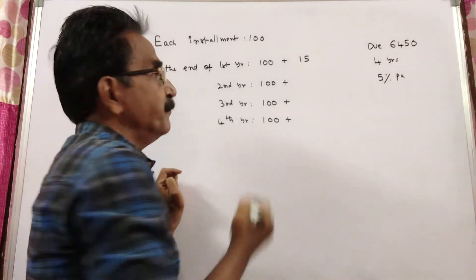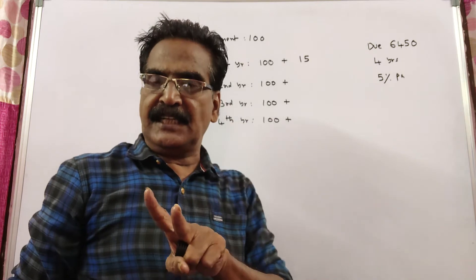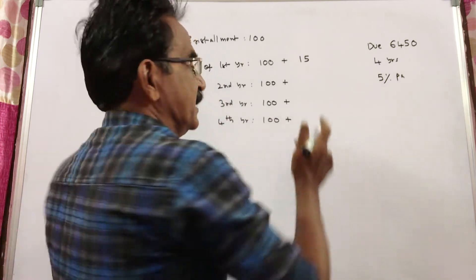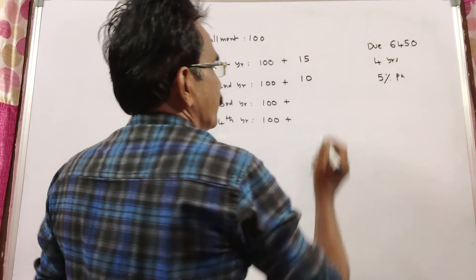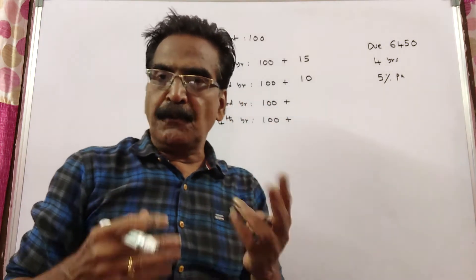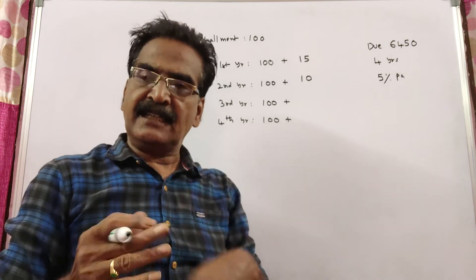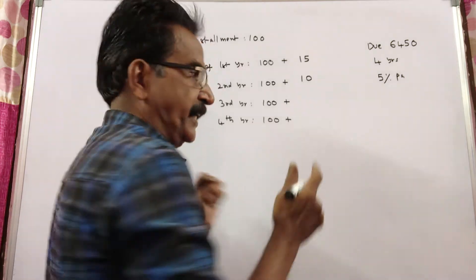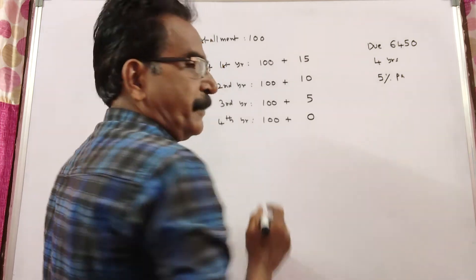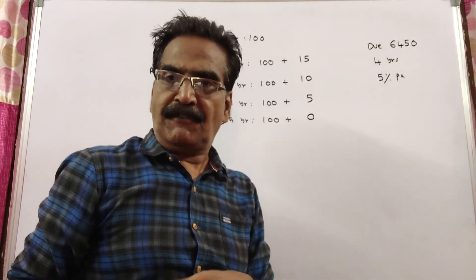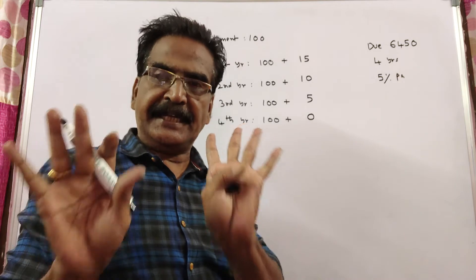The installment you pay at the end of the second year will fetch interest for 2 years, that is Rs. 10. The installment you pay at the end of the third year will fetch interest only for 1 year, that is Rs. 5. And the installment you pay at the end of the fourth year will fetch no interest — the period is over.